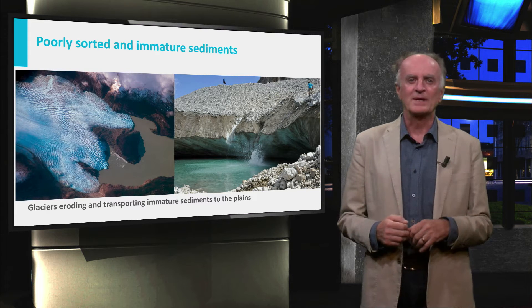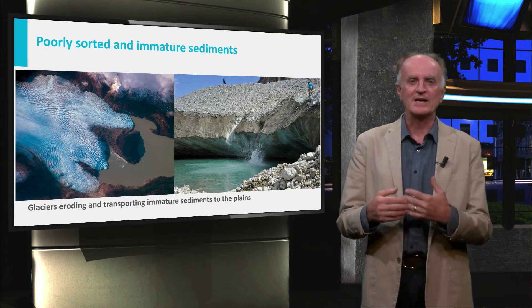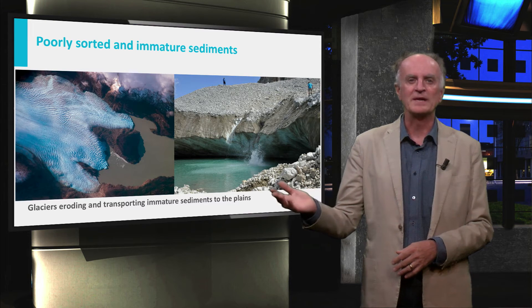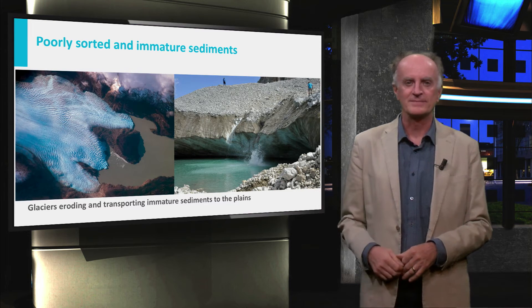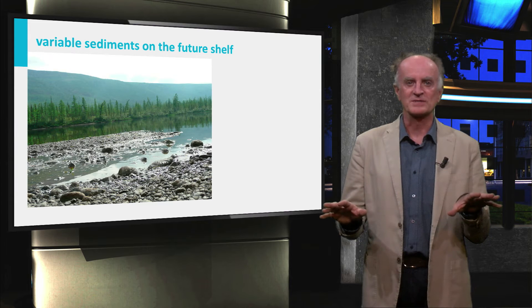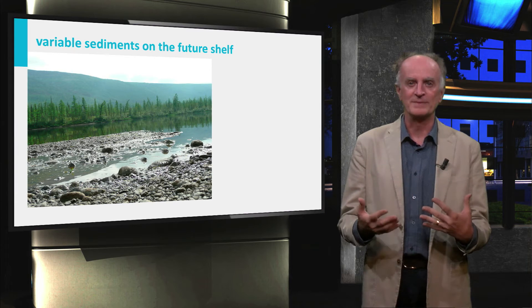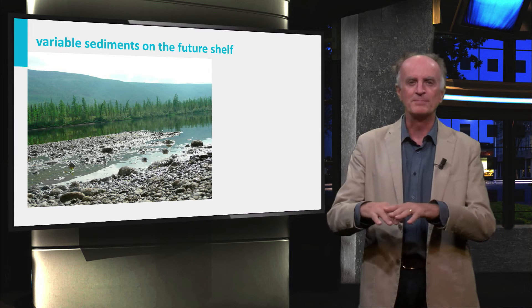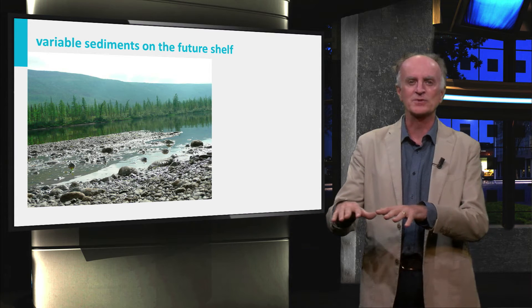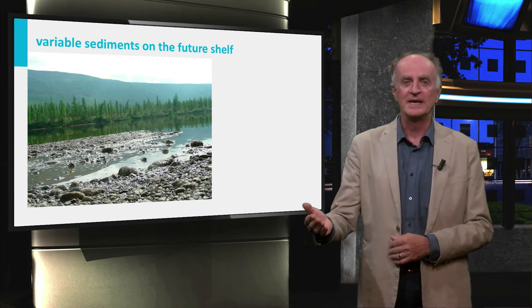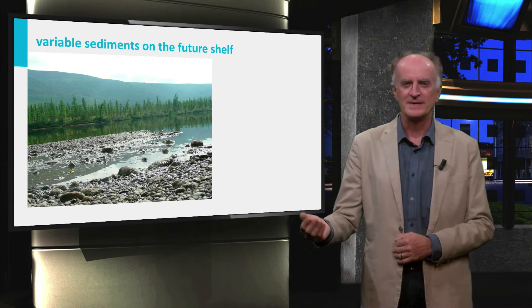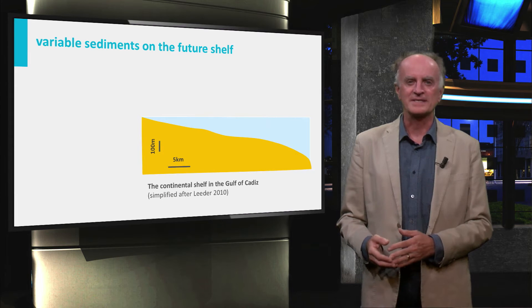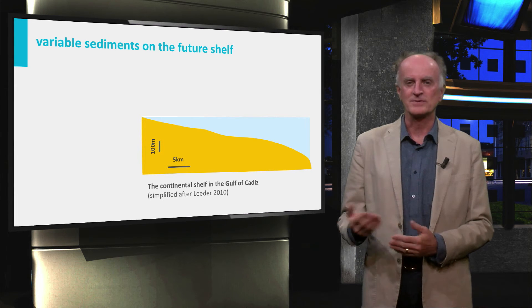Particularly, when glaciers began their retreat, large amounts of sediments were deposited, ready to be transported away by rivers. Little vegetation was present and mechanical erosion was dominant. Rivers formed wide valleys, transporting the poorly sorted sediment to the coastal domains and further towards the sea, depositing sediments in prograded delta systems close to the shelf edge.